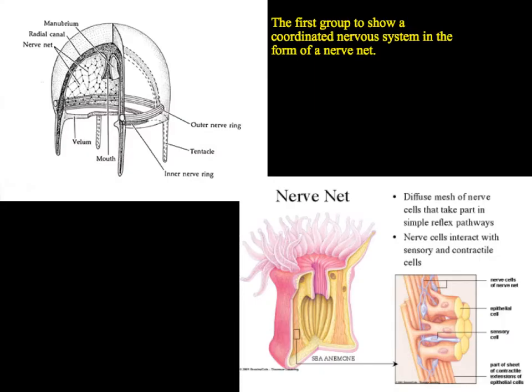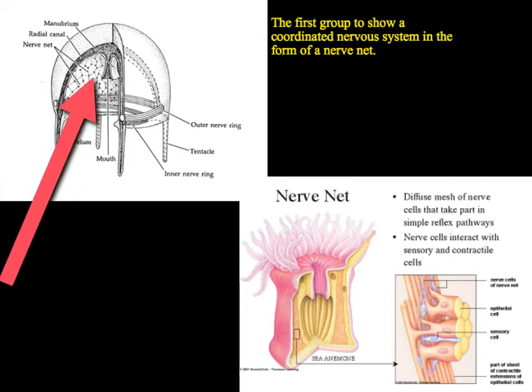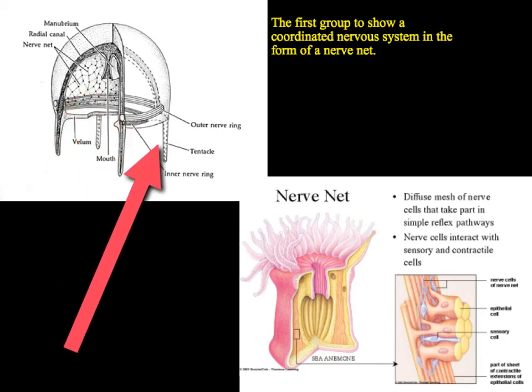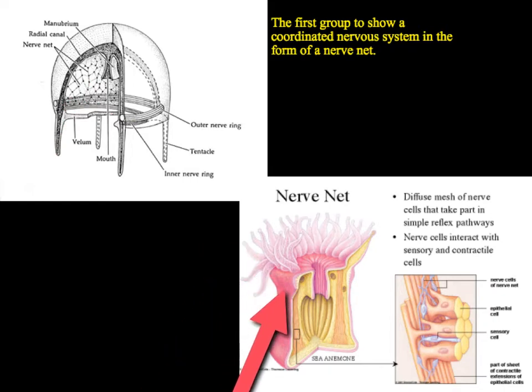We're going to take a look at their nervous system — this is the first group to have a nervous system. They have what we call a nerve net. This nerve net is a mesh-like network of fibers that runs through both the bell and also through the body of the polyp form. This diffuse nerve net is composed of cells that can communicate with one another and coordinate the actions of the entire organism.